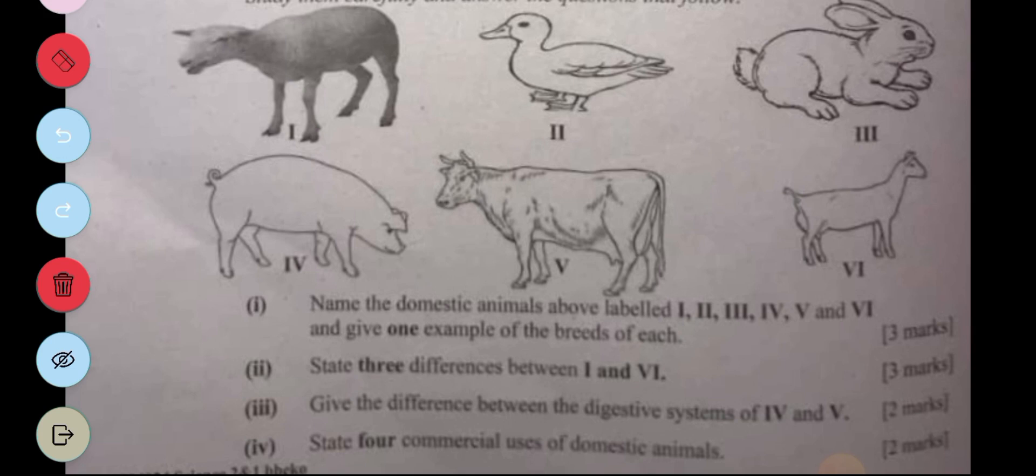Part three: Give two differences between the digestive system of four and five. Four is a pig and five is a cow. A pig is monogastric, a cow is polygastric or ruminant. The difference is that four has one chambered stomach, five has four chambered stomach. Also, four is able to digest simple sugar, and five is able to digest complex sugar, for example cellulose.